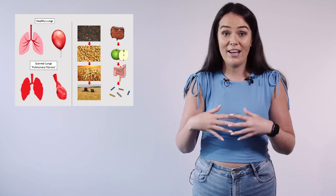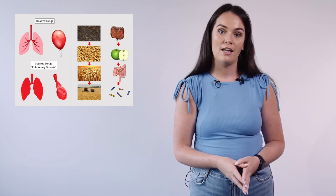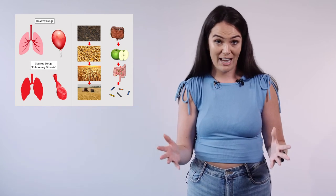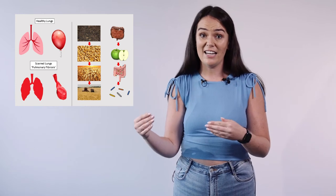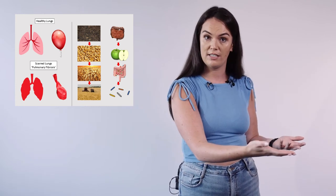And by products, I mean the products that are formed when our friendly bacteria break down the soluble fibre. These products are potentially protective. And not only that, but they can actually enter into our bloodstream and reach distal organs such as the lungs, for example.